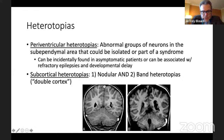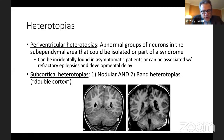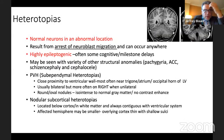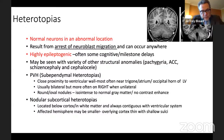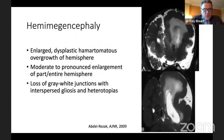Heterotopias are most important to us surgically when they're around the ventricle. The periventricular heterotopias — nicely illustrated here with two little gray chunks sitting just inside the lateral ventricle — are quite epileptogenic and a very attractive surgical target. Heterotopias can occur anywhere, are highly epileptogenic, and can be treated with a variety of techniques. In high-resource countries, we can put a laser fiber in and burn them. They're very amenable to treatment and people tend to do quite well.